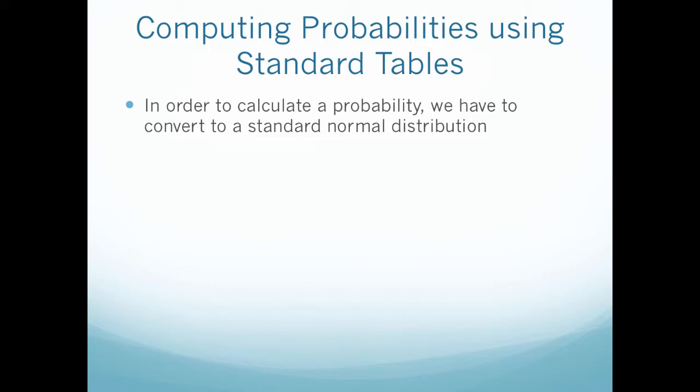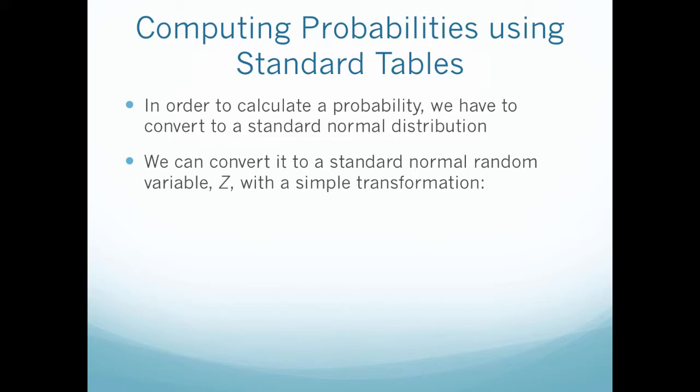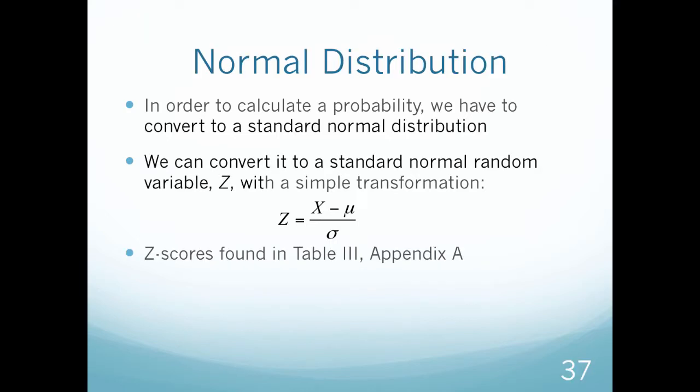So in order to calculate the probability, we have to convert our normal distribution to a standard normal distribution. And we can do that by converting it to a standard normal random variable, z, with a simple transformation or conversion. This formula is z equals my random variable minus μ all over σ. So why do we care to do this? The reason we care to do this is that numeric approximations have been tabulated for a standard normal distribution and are in the back of our book. So first we have to take our normal distribution, convert it to the z value, which we call a z score, and we can then turn to these tables in the back of the book to find our given probability.